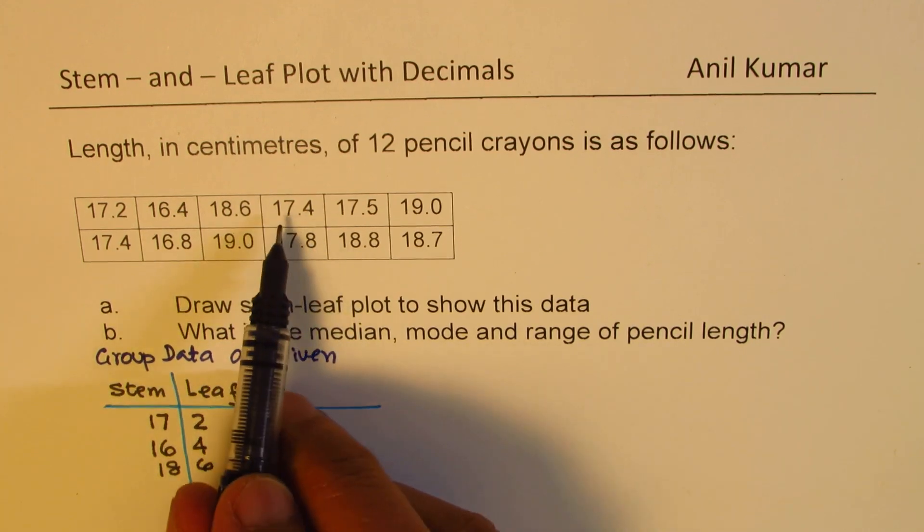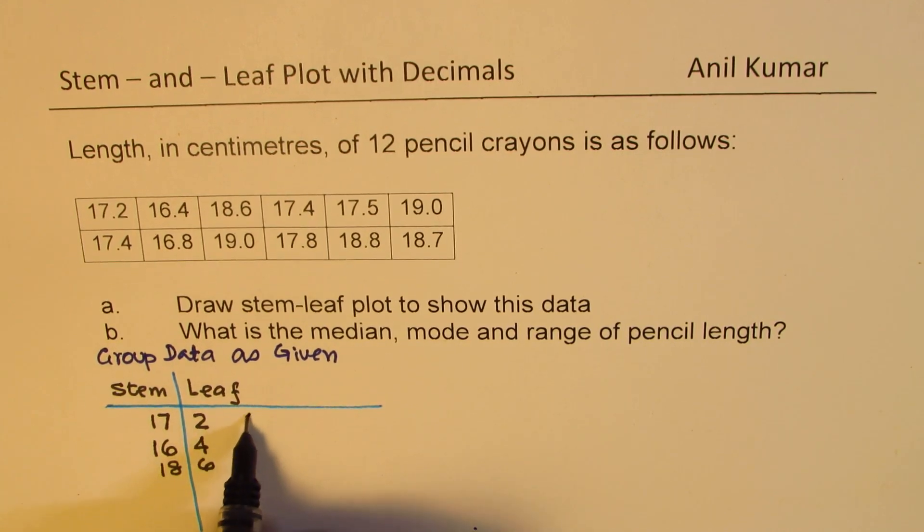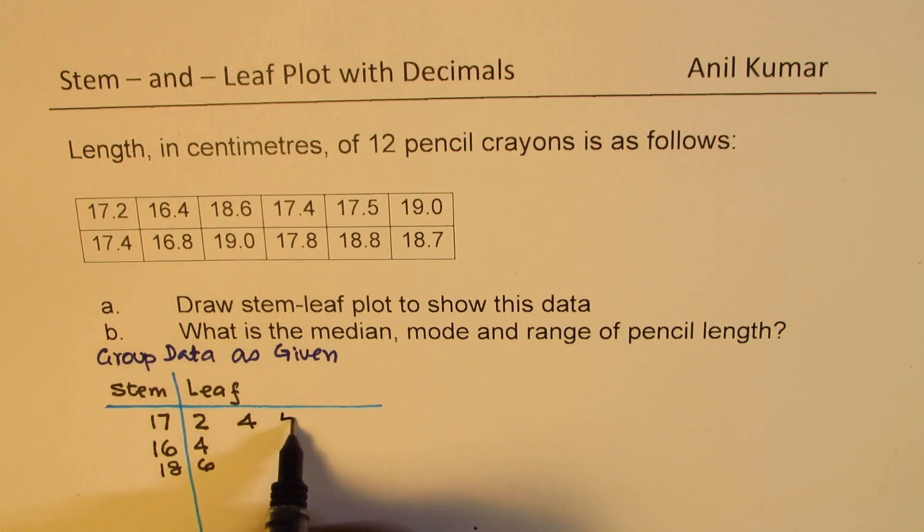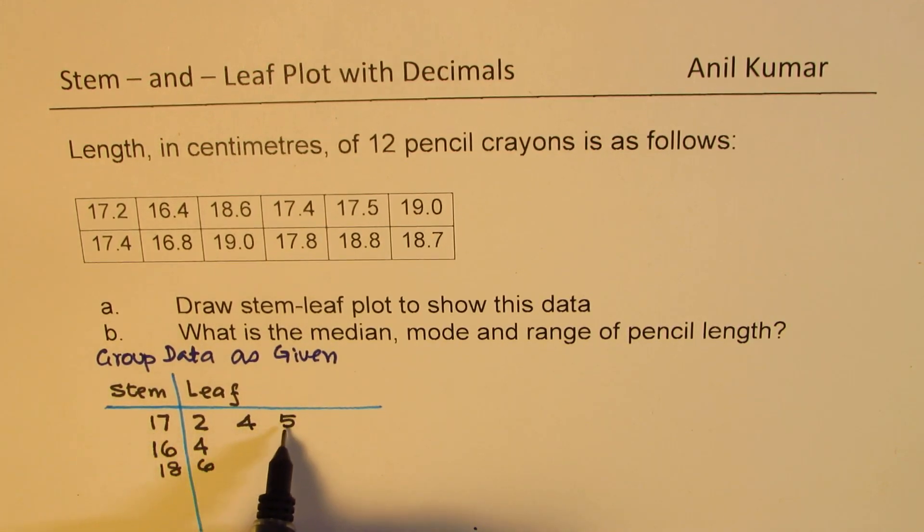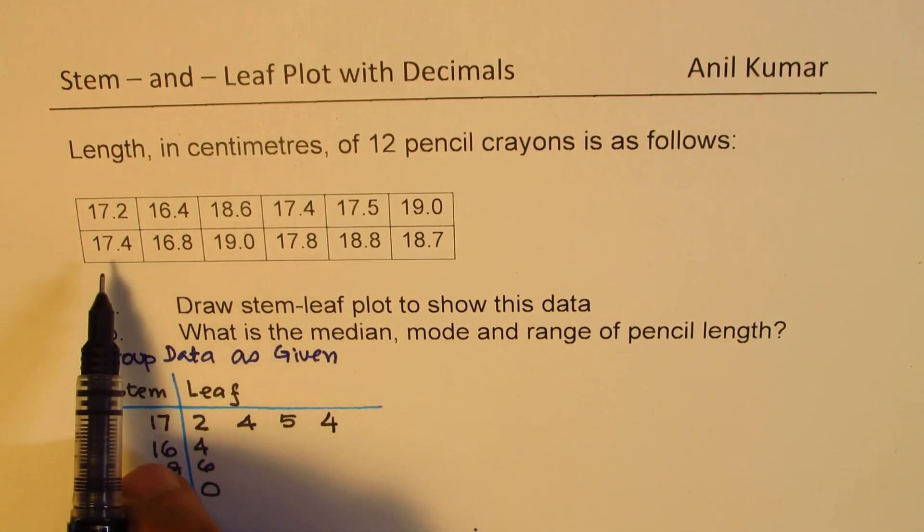Then we got 17.4. We already had 17 here, we'll place 4 in the same row. 17.5 - 5 goes there. Then we have 19.0. 19 is the new group, so in this group we'll place zero. 17.4 is already there, we'll put one more.